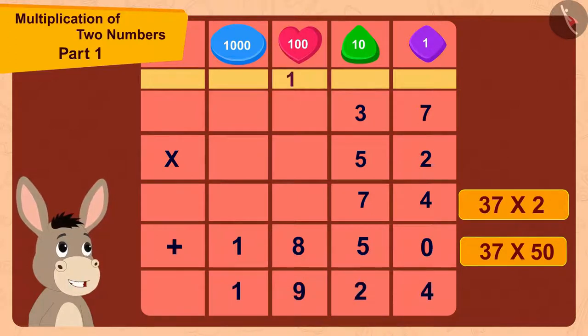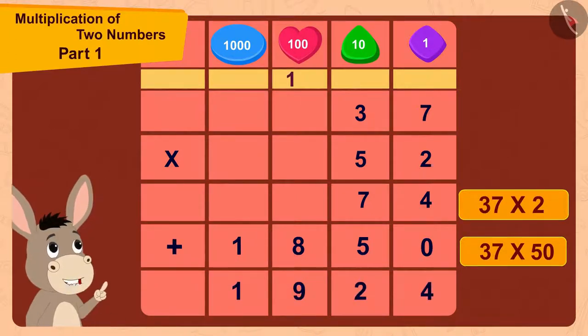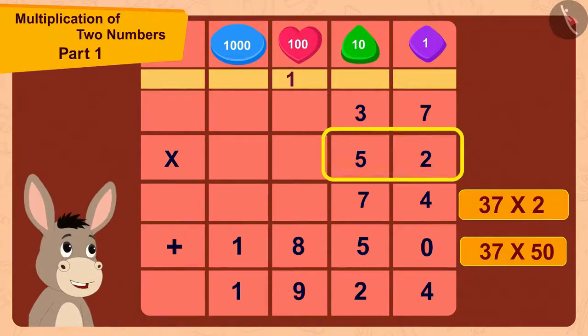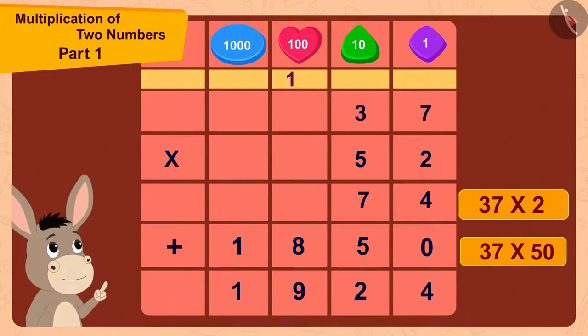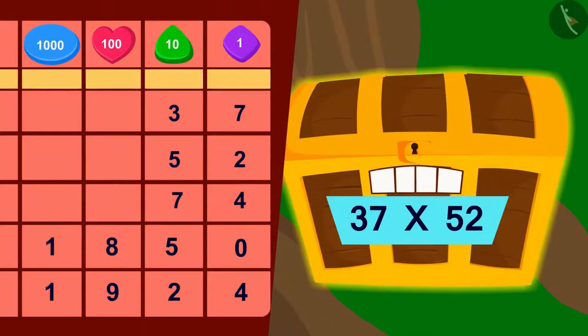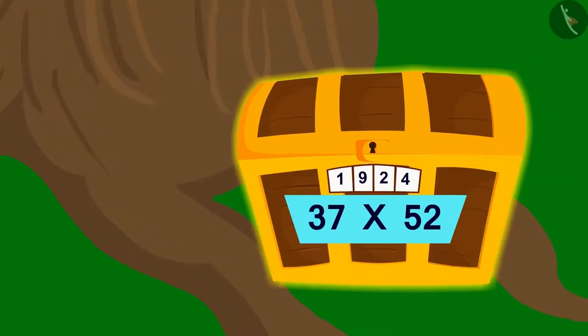Oh wow! I got the code for this lock. The code for this lock could be 37 times 52 or 1924. Bhola quickly entered 1924 in the lock's code and the lock opened.